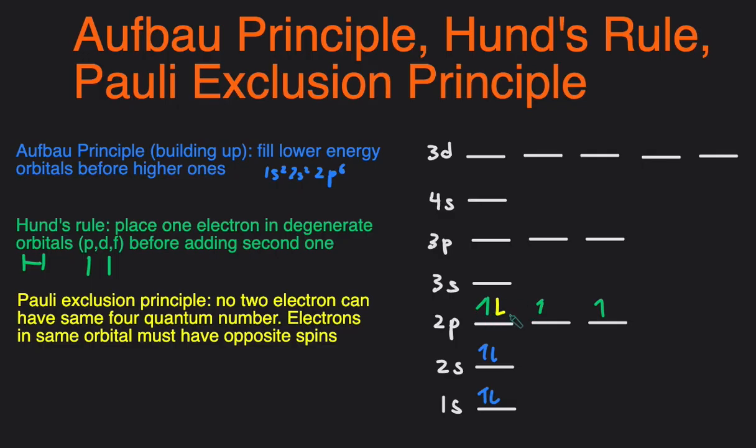A violation of Pauli Exclusion Principle is when you have two electrons of the same spin in the orbital. So if we had up-up, that would be a violation, or down-down, that would be a violation.